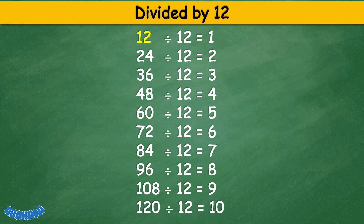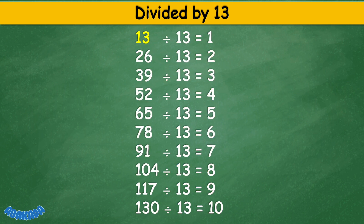Divided by 12: 12 divided by 12 equals 1, 24 divided by 12 equals 2, 36 divided by 12 equals 3, 48 divided by 12 equals 4, 60 divided by 12 equals 5, 72 divided by 12 equals 6, 84 divided by 12 equals 7, 96 divided by 12 equals 8, 108 divided by 12 equals 9, 120 divided by 12 equals 10.